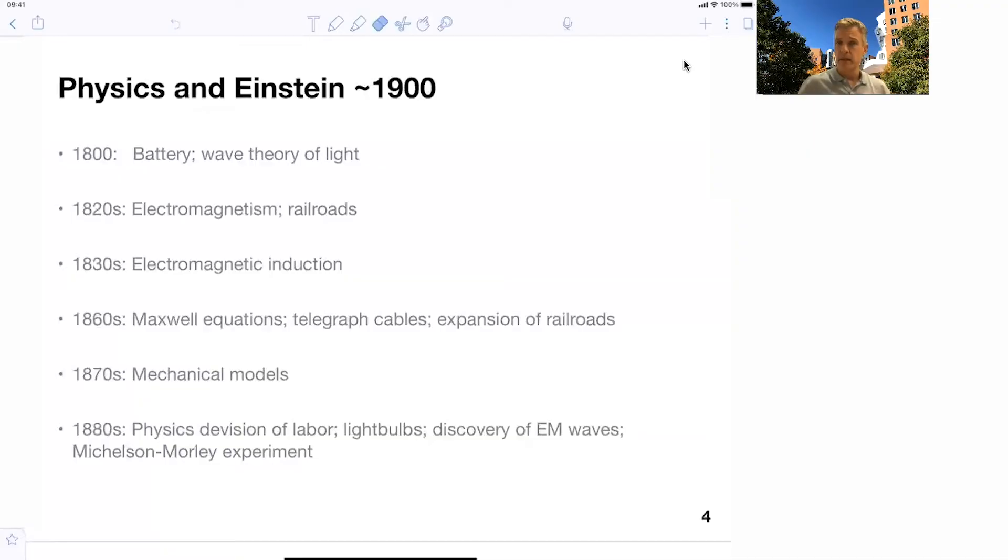In the 1880s, there's a new phenomenon in the structure of physics. Up to this point, there was a professor of physics at an institute. He had a chair, and everybody was working for them. But then there was a change in the way physics research was conducted, such that there started to be a division of labor between experimental physicists and theoretical physicists.